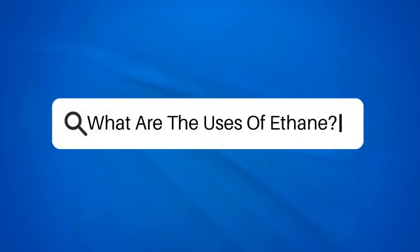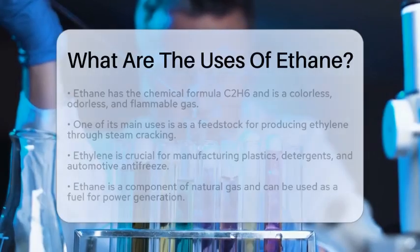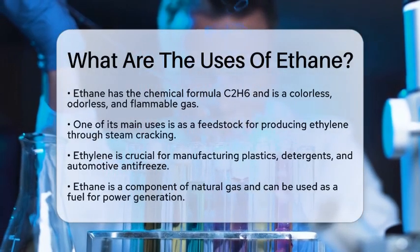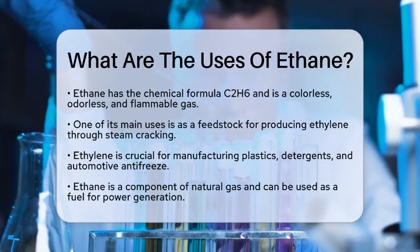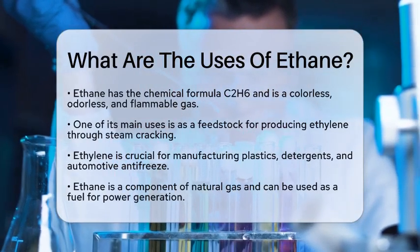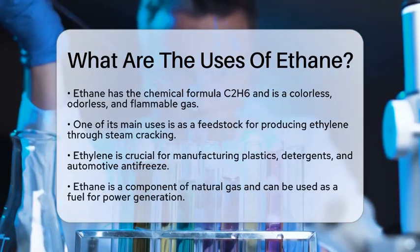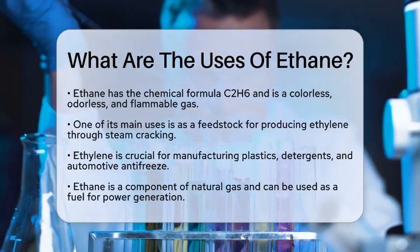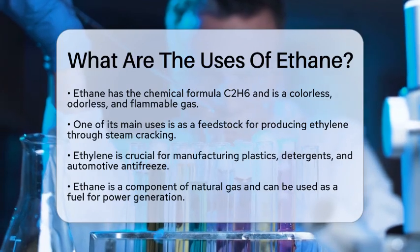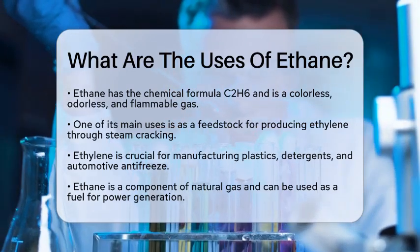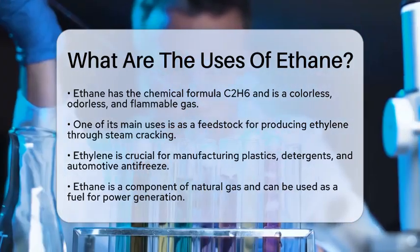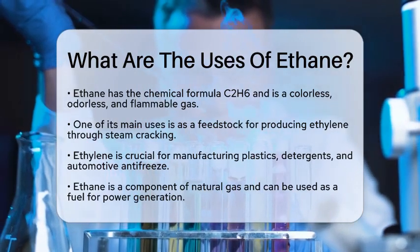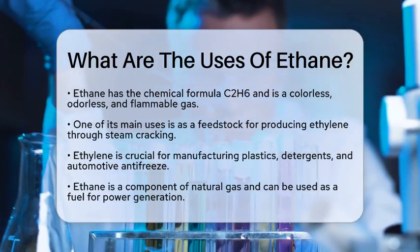What are the uses of ethane? Have you ever wondered about the uses of ethane, the simple yet fascinating compound with the chemical formula C2H6? Ethane is a colorless, odorless, and flammable gas that plays a significant role in various industries. Let's break down its uses and see how it fits into the world of chemistry.